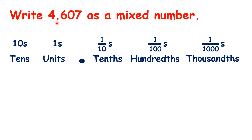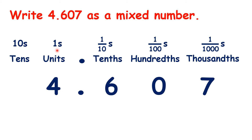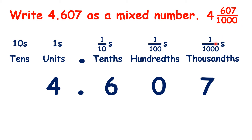So, what is 4.607 as a mixed number? We have 4 units, 6 tenths, no hundredths, and 7 thousandths. Remember, the fraction of our mixed number is always the smallest place value of the decimal number. So, because we have thousandths, our mixed number will have a denominator of 1,000. So, we have 4 and 607 thousandths as our mixed number.